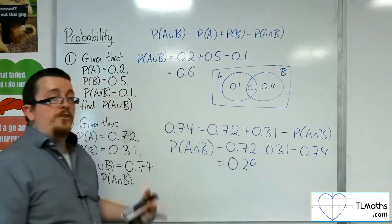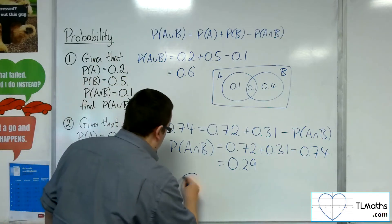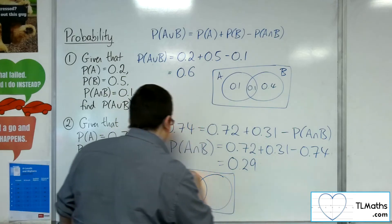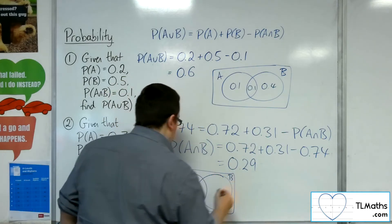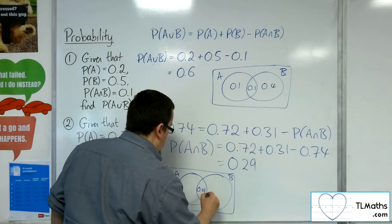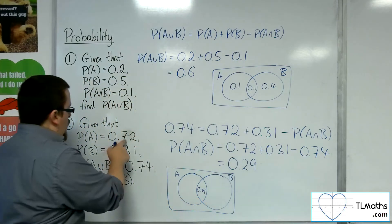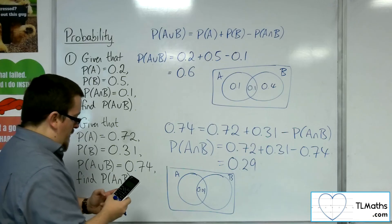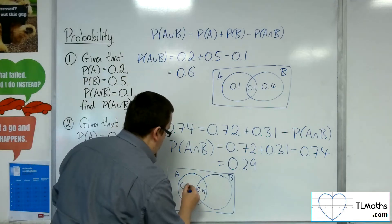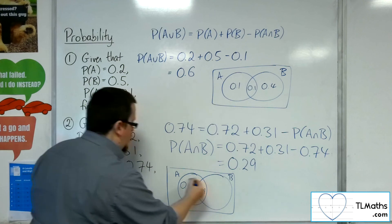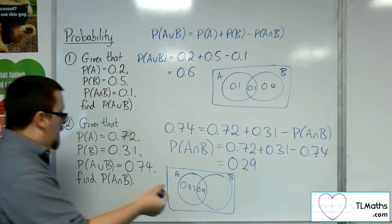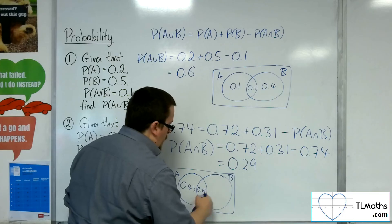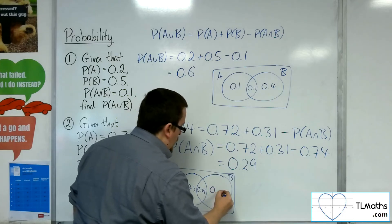So now, if I wanted to draw the Venn diagram that would go with that. There's A, there's B. 0.29 is now in the middle, in the intersection. So 0.72 take away the 0.29 gets me 0.43 in order for those two to add up to 0.72. The probability of 0.31, so those two have got to add up to 0.31. So that would be 0.02.